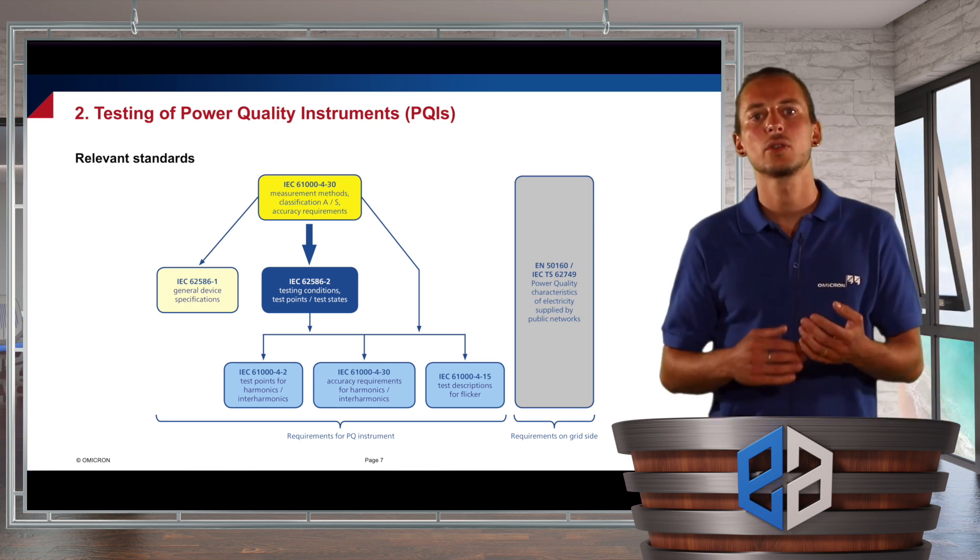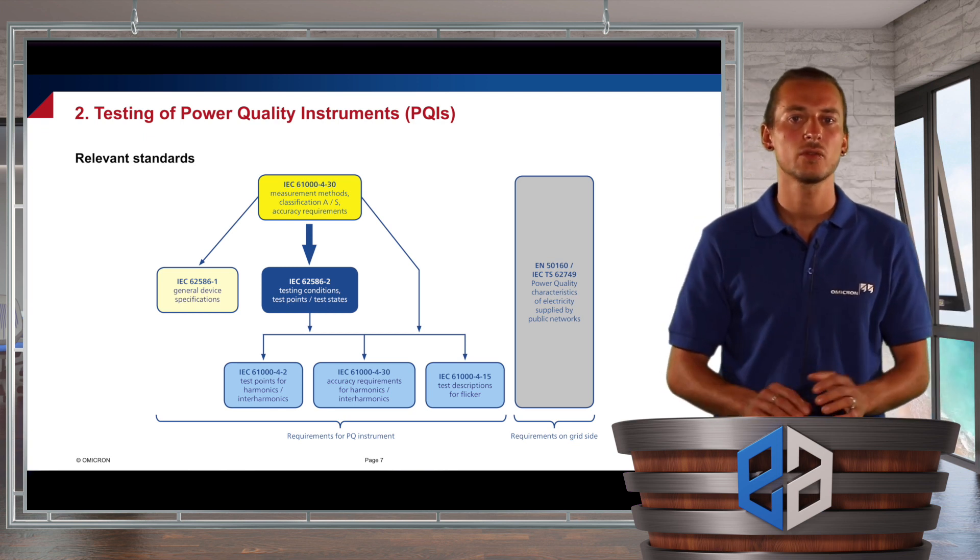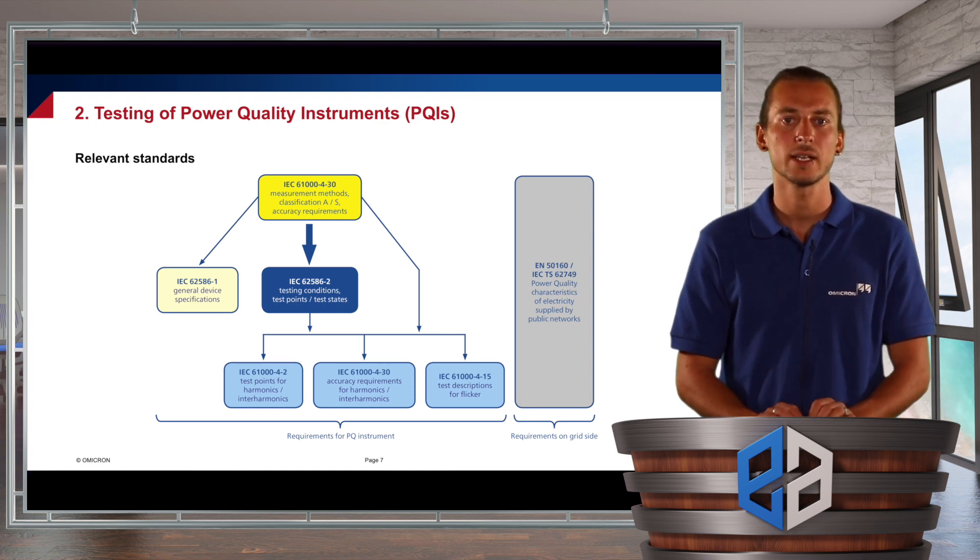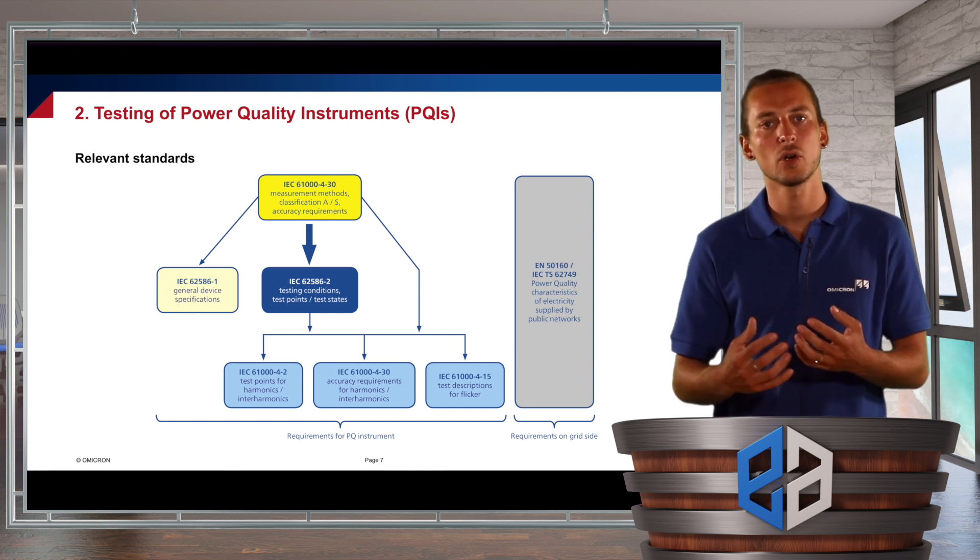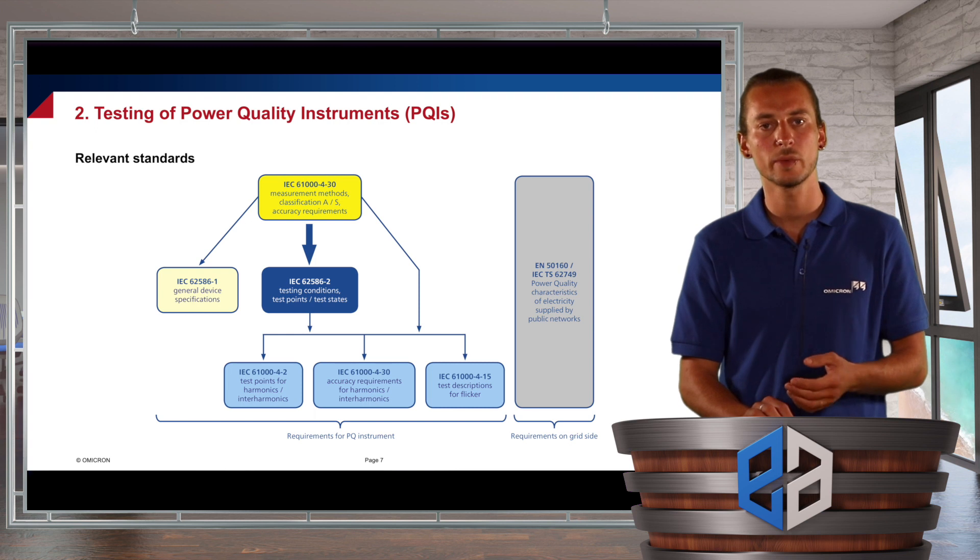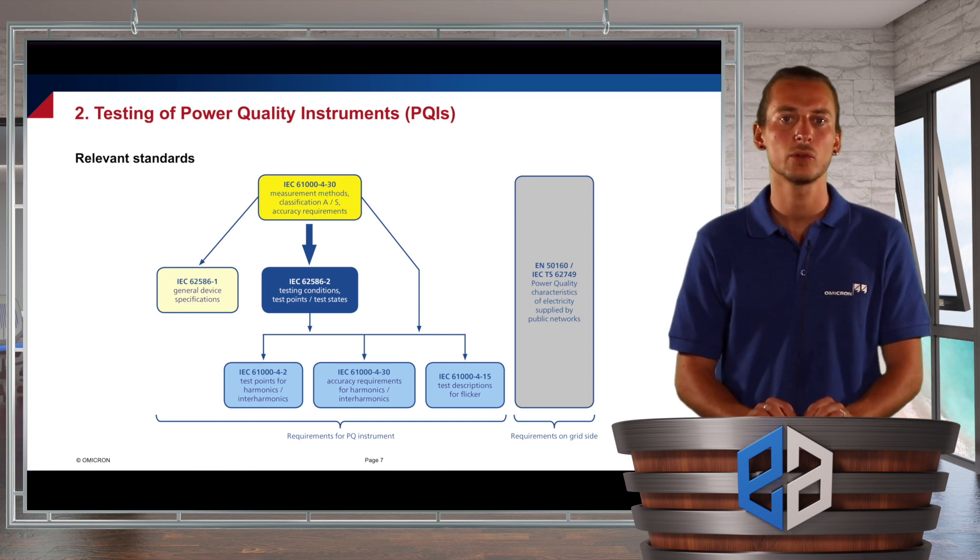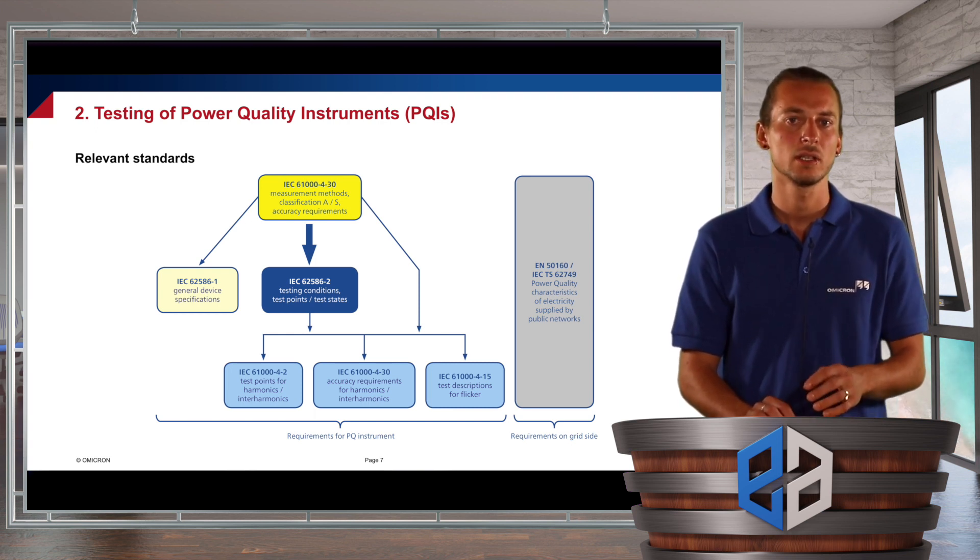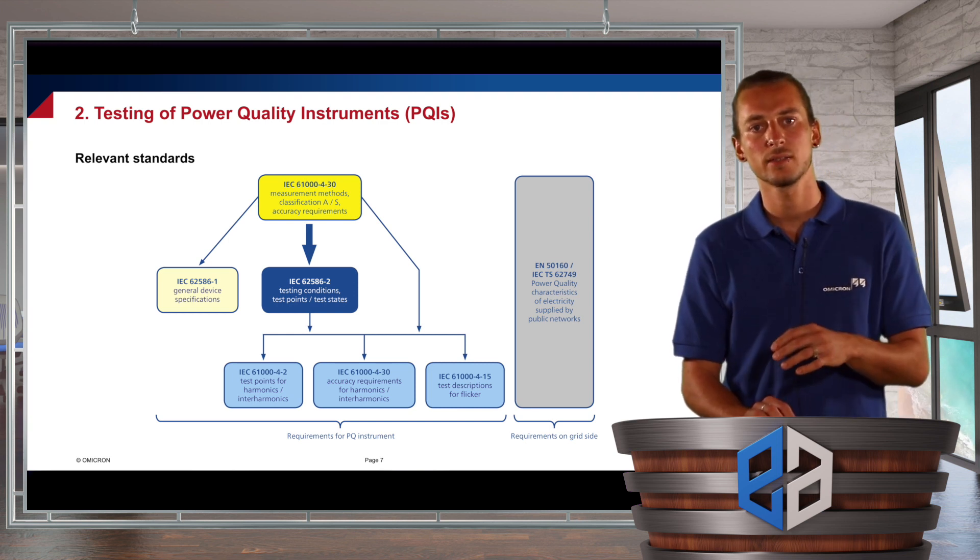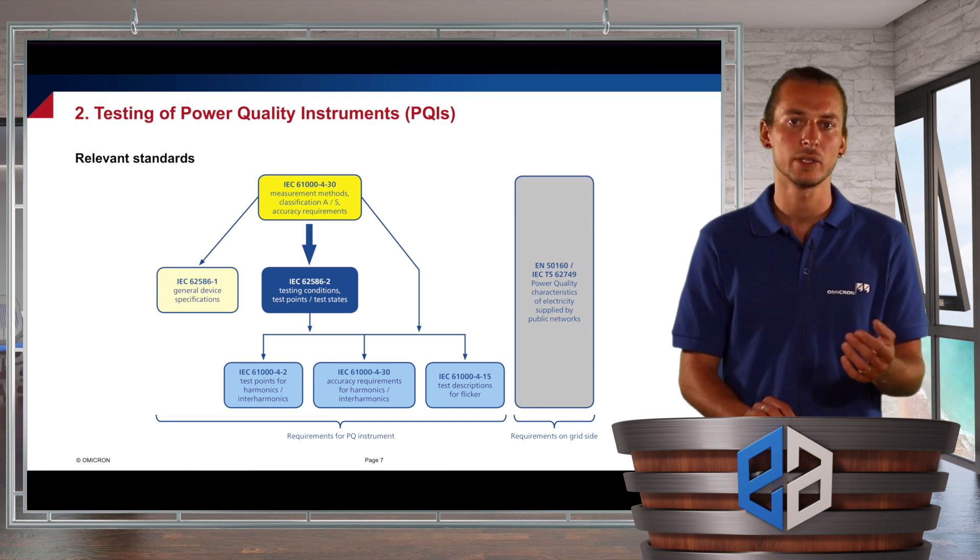So coming to the relevant standards which are valid for power quality testing. First of all, and most important, there's the IEC 61430, which is the most important standard when it comes to requirements for power quality instruments and also defines the accuracy requirements and the classification into class A, which is very accurate, or class S, which is a little bit less accurate.